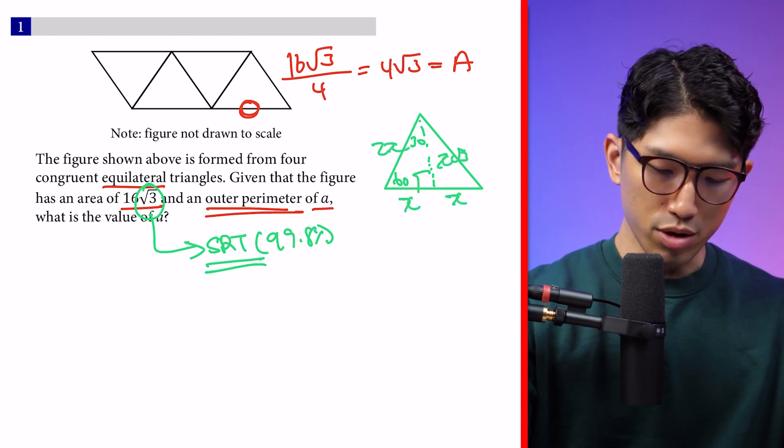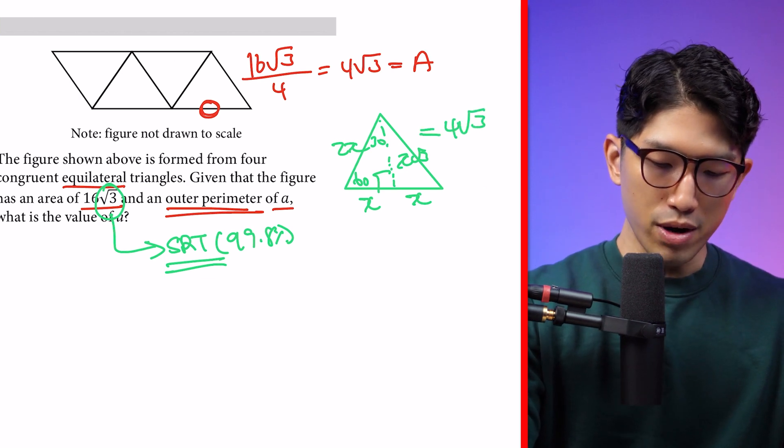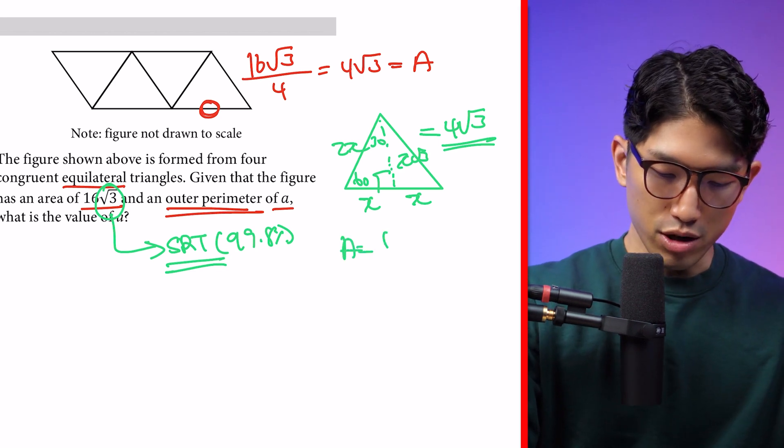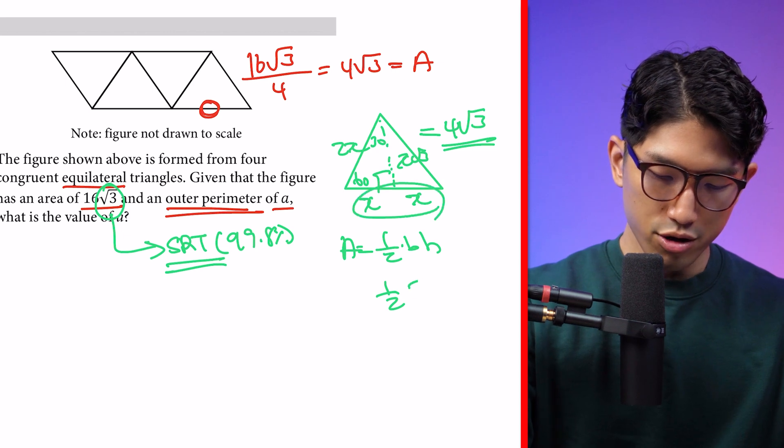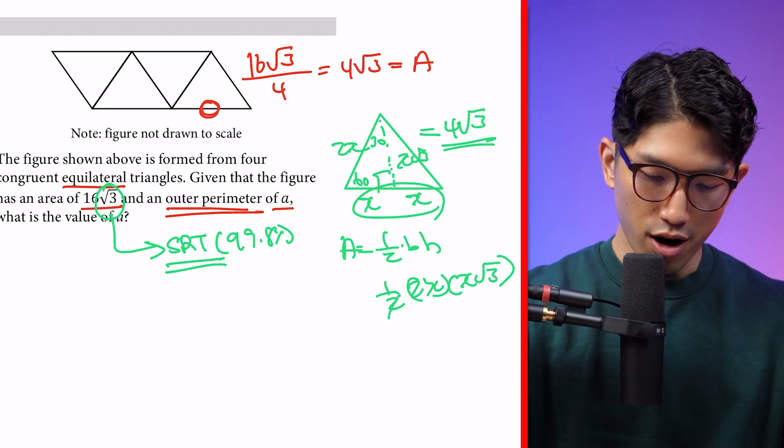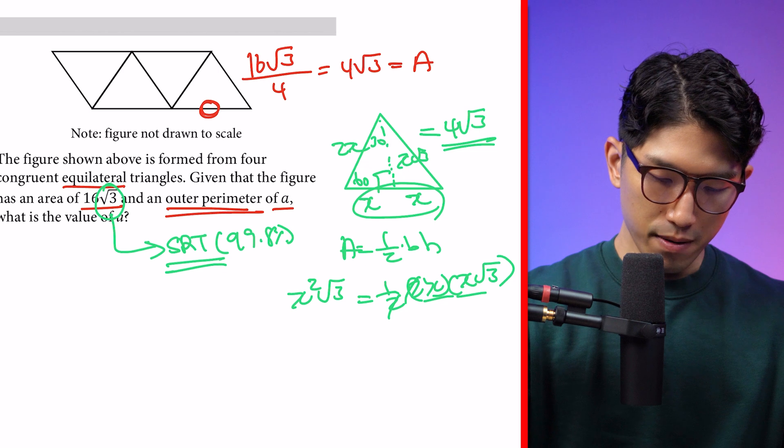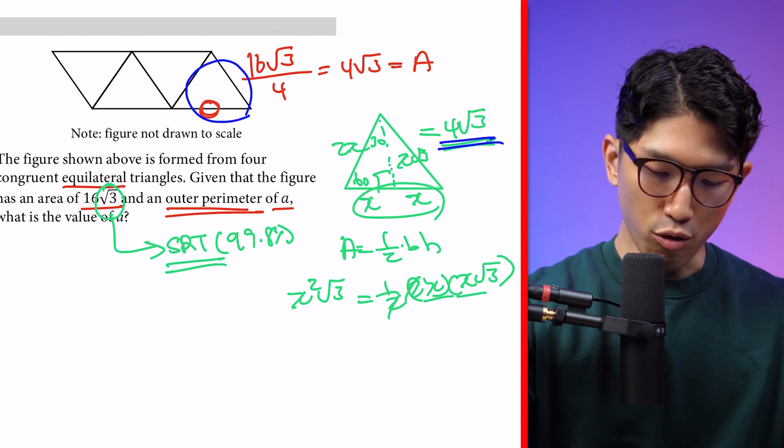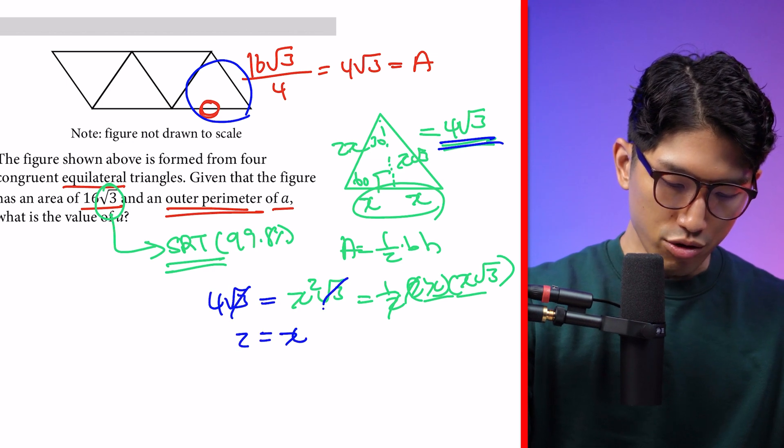We know this equilateral triangle has an area of 4√3. How do we find the area? Area of a triangle is 1/2 base times height. So 1/2, what's the base? It's 2x. 2x times the height, which is x√3. If we simplify the math, 2 crosses out, and we get the area as x²√3. Based on the question, we know the area of a single triangle is 4√3. So x²√3 equals 4√3. √3 cancels out. Our x equals 2.